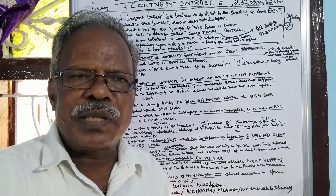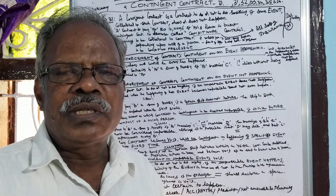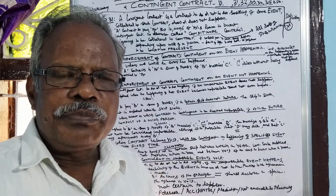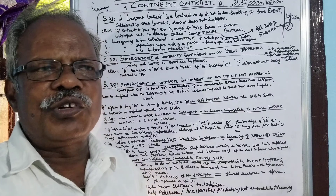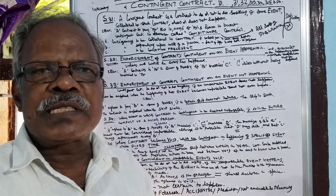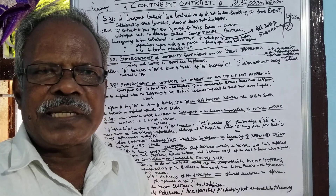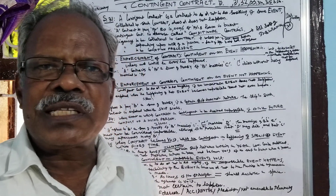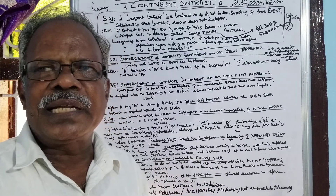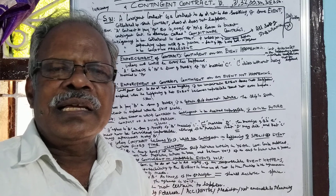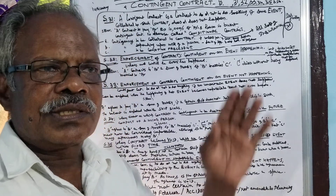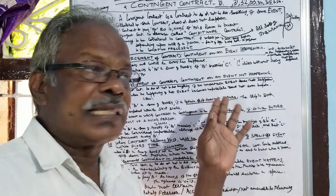In some departments, a contingent fund is also allocated. That means, to meet unforeseen expenditures — some accidental expenditures — the contingent amount is allocated, because immediately they cannot get it sanctioned. So contingent amount is allocated. Now we will see the contingent contract.